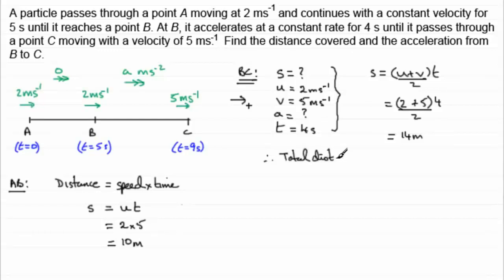Total distance, let's say AC, equals what is going to be the 10 plus the 14 metres, giving us a total distance of 24 metres then. So that's that part done.